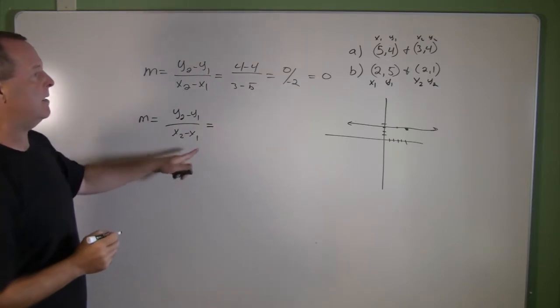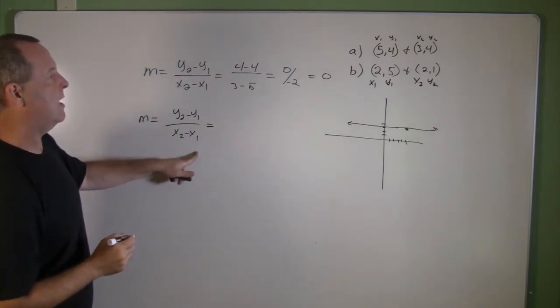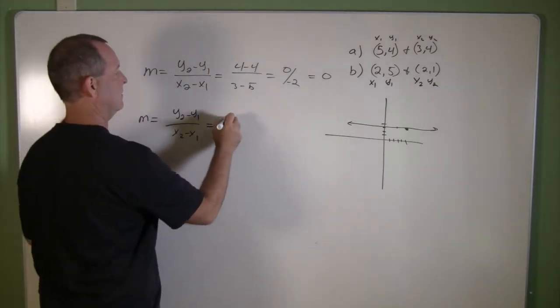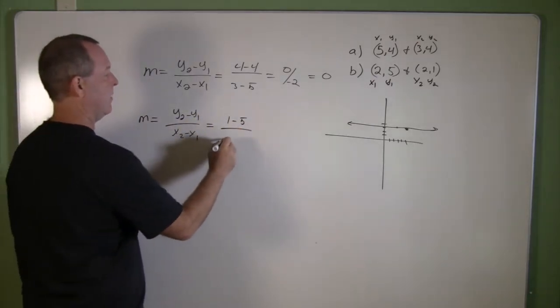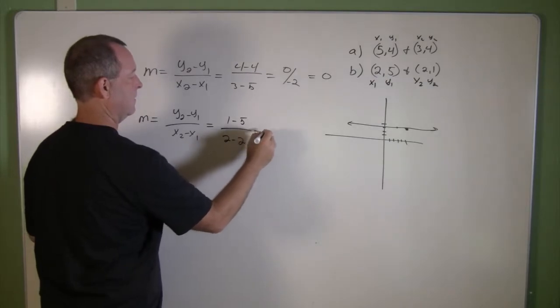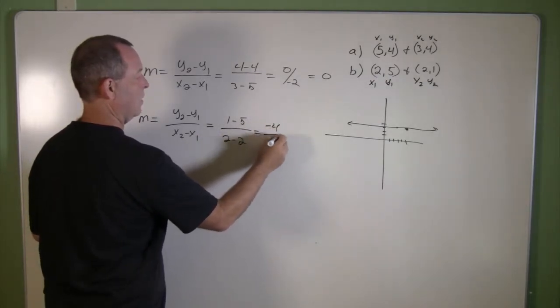The change of my y's tells me I have a 1 take away a 5. Change of my x's, I have a 2 take away a 2. That equals negative 4 over 0.